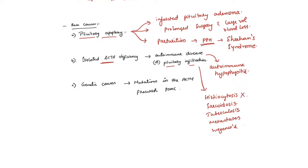These are the things which can cause secondary adrenal insufficiency by affecting the pituitary gland. The genetic causes are very rare and usually involve mutations in the ACTH precursor, pro-opiomelanocortin (POMC). Deficiency of POMC also leads to decreased ACTH, which in turn leads to decreased steroidogenesis from the adrenal glands.